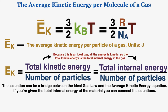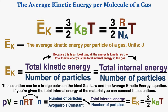This equation can serve as a bridge between the ideal gas law and the average kinetic energy equation. If you're given the total internal energy of the material, you can connect the equations using this pattern: use PV = nRT to find n, then use n to find the number of particles, and use the number of particles along with the total internal energy to calculate the average kinetic energy, setting it equal to 3/2 times Boltzmann's constant times temperature.